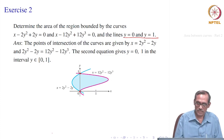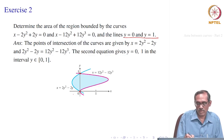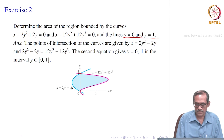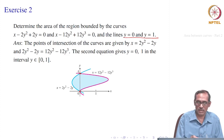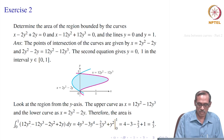Now, how to get this area? You can do it in many ways. One is to divide into sub-portions if you want to integrate through x, but here x is given as a function of y, so it is quite natural to go the other way. Looking from the y-axis, the pink curve is on the top and the blue curve is on the bottom. So you can write the integral from 0 to 1 of (12y² - 12y³) minus (2y² - 2y).